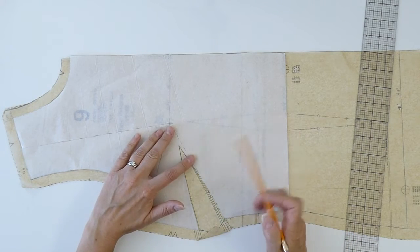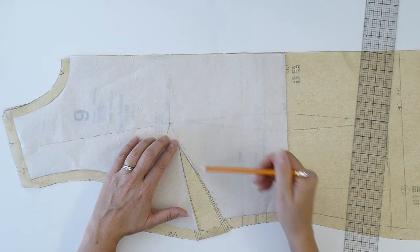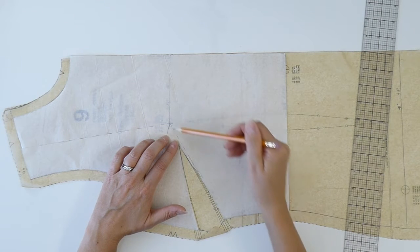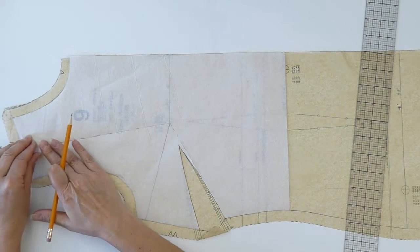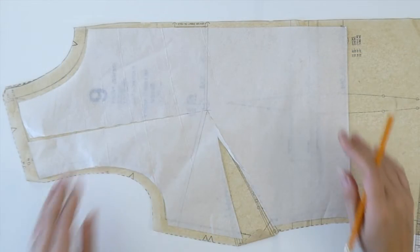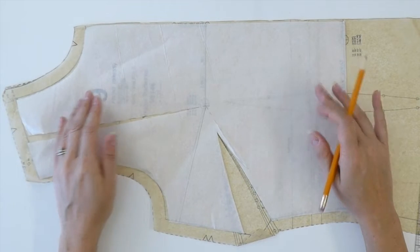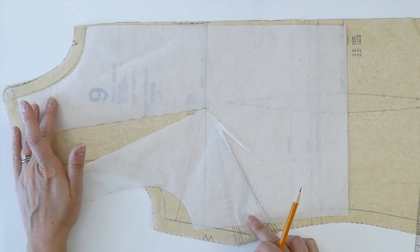So this is the original dart here. This here is going to be my straight line that's joining the bust point to the lower dart leg here. Now when I have that done, I can slash along each of those lines and close my bust dart.